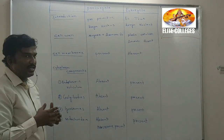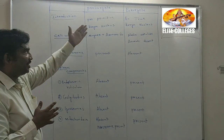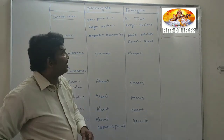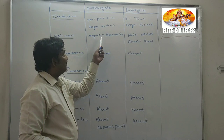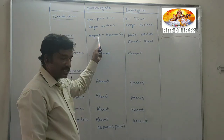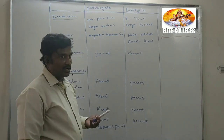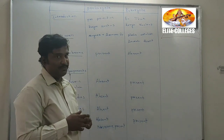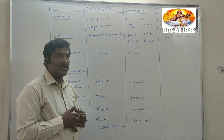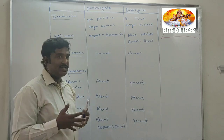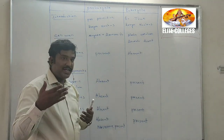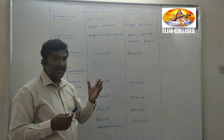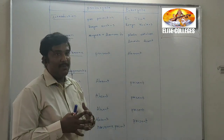Now let us compare the cell wall composition of prokaryotes with eukaryotes. In the cell wall of prokaryotes it is chemically composed of sugars, also called carbohydrates, and it also contains some amino acids. There are specialized sugars called N-acetylmuramic acid and N-acetylglucosamine. So the cell wall composition of prokaryotes is composed of sugars and amino acids.